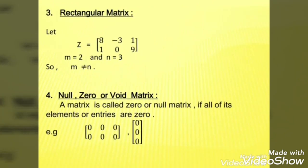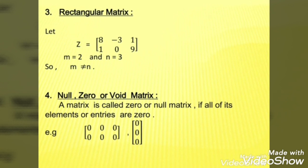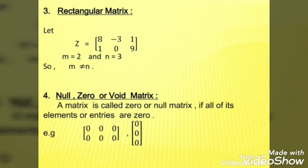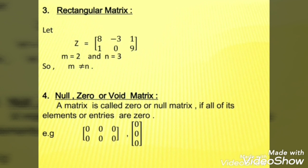The next type is rectangular matrix. Consider matrix Z. In matrix Z, you can see that there are 2 horizontal lines and 3 vertical lines. M represents rows and N represents columns. When the number of rows is not equal to the number of columns, that matrix is called a rectangular matrix.